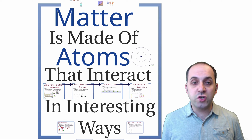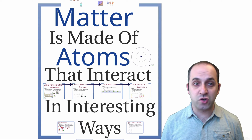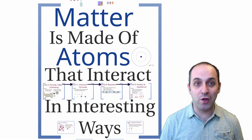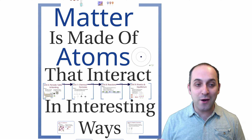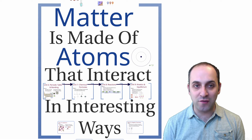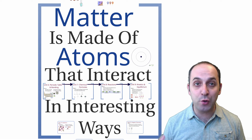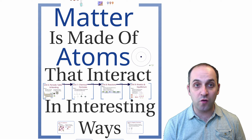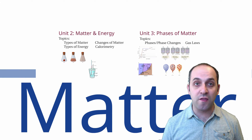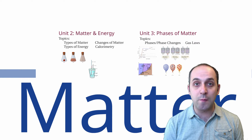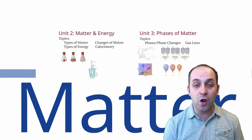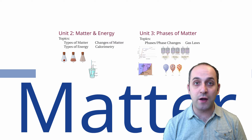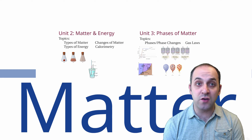This is really showing us the overall organization of the course. If there's one thing I want you to take from this course, I'll take a page from Richard Feynman — I really just want you to understand that matter is made of atoms that interact in interesting ways. We can put each unit into this larger understanding of chemistry. For the first couple of units we're dealing with the matter side of things: unit 2, matter and energy, and unit 3, phases of matter — both looking at large amounts of matter and how they behave.